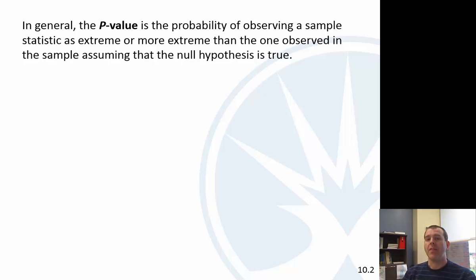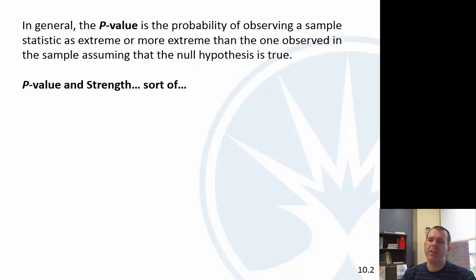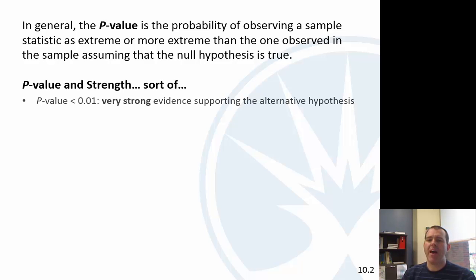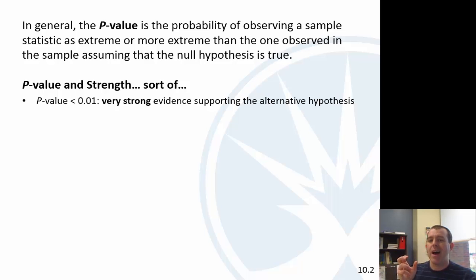The p-value is the probability of observing your sample statistic as extreme or more extreme than the one observed, assuming the null hypothesis was true. If we have really small p-values — really unusual events — we can say there's very strong evidence.